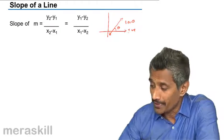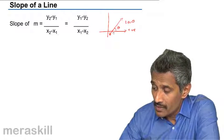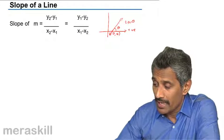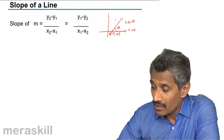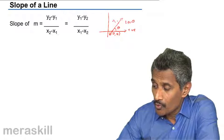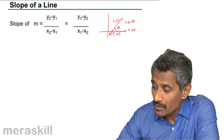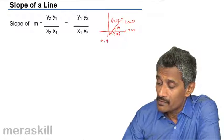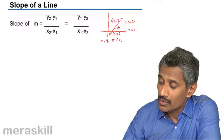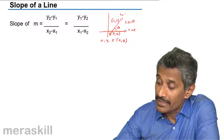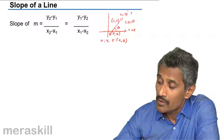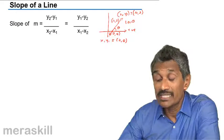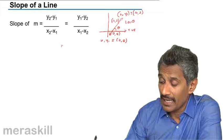Suppose this is (2,0) and this is (4,2). So we have (x₁,y₁) as (2,0) and (x₂,y₂) as (4,2). What is the slope of this line? The slope of this line M.